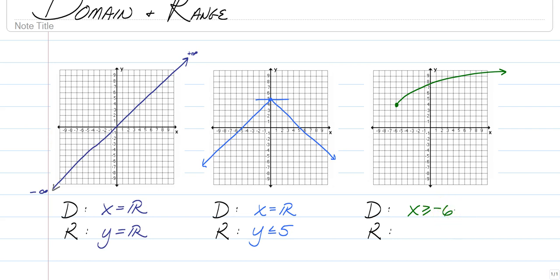But then our range, we have to think of separately. So our range goes up forever, but it does not go down forever. It never gets below level four for our up and down or our y value. So y has to be greater than or equal to four.